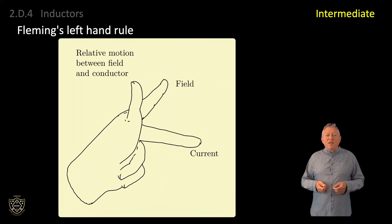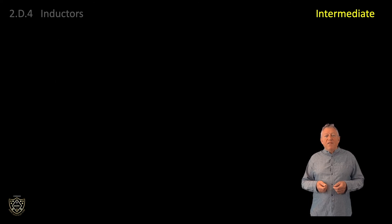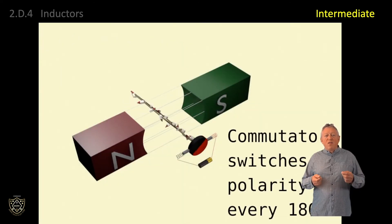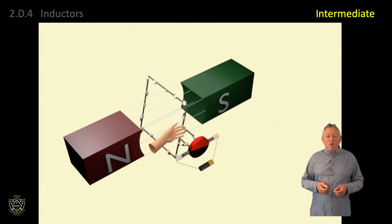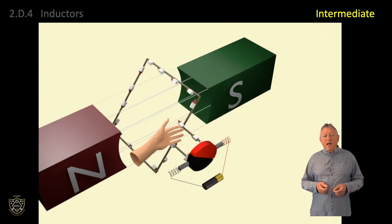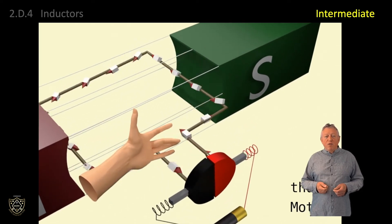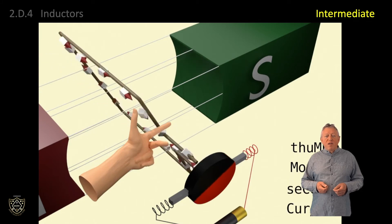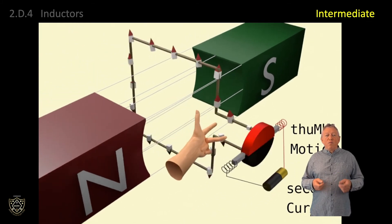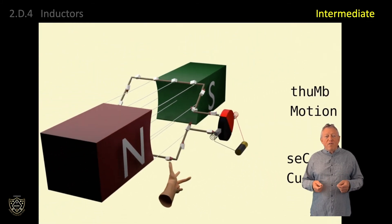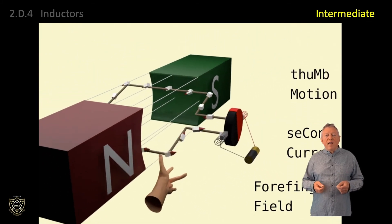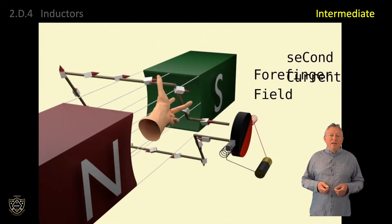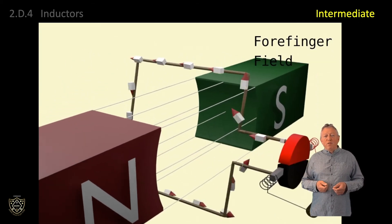This animation shows Fleming's left hand rule being used to illustrate the three quantities — motion, field and current — in a DC motor. Also shown are the brushes and commutator, which switches the direction of the current every half cycle to maintain the motion of the motor.